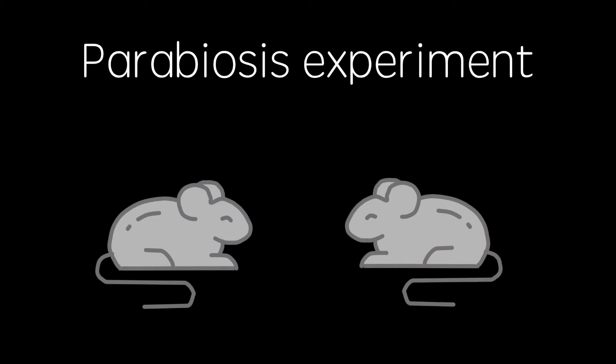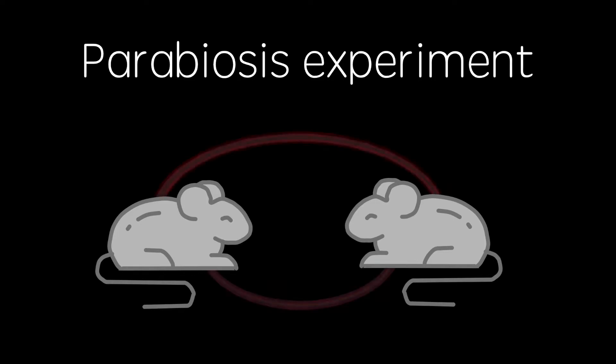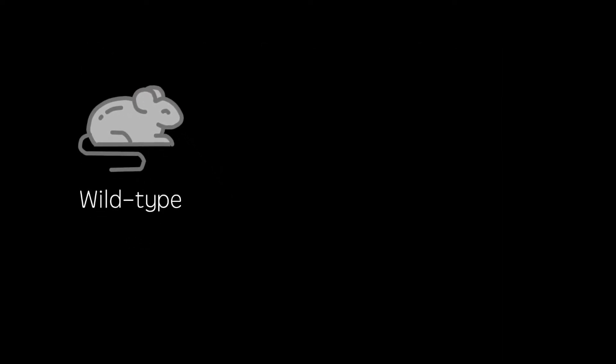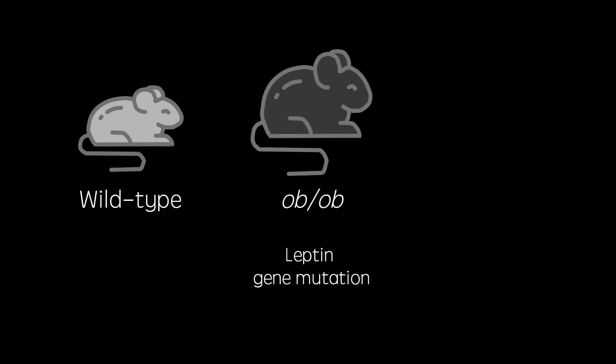This was proven by a series of parabiosis experiments, which involve the surgical connection of the circulations of two experimental animals. The experiments used wild-type mice as well as two mouse models for obesity, the first of which is the OB-OB mouse. OB is the gene which codes for leptin. These mice have homozygous mutations in the OB gene, which increases their appetite massively, making them obese.